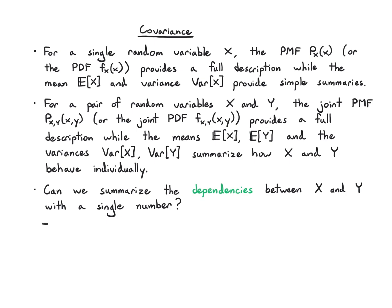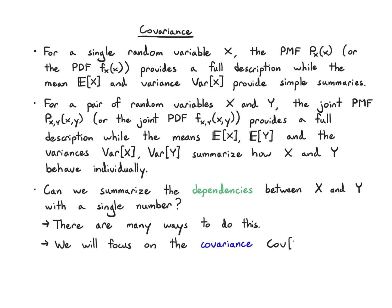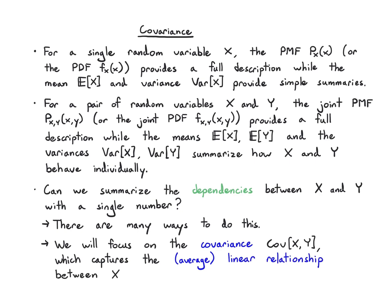There are going to be many ways we could do this, and each will have pros and cons. We are going to specifically focus on the covariance, which we write as Cov(x,y), and that captures the average linear relationship between x and y — or more precisely, between x and y with their means removed.